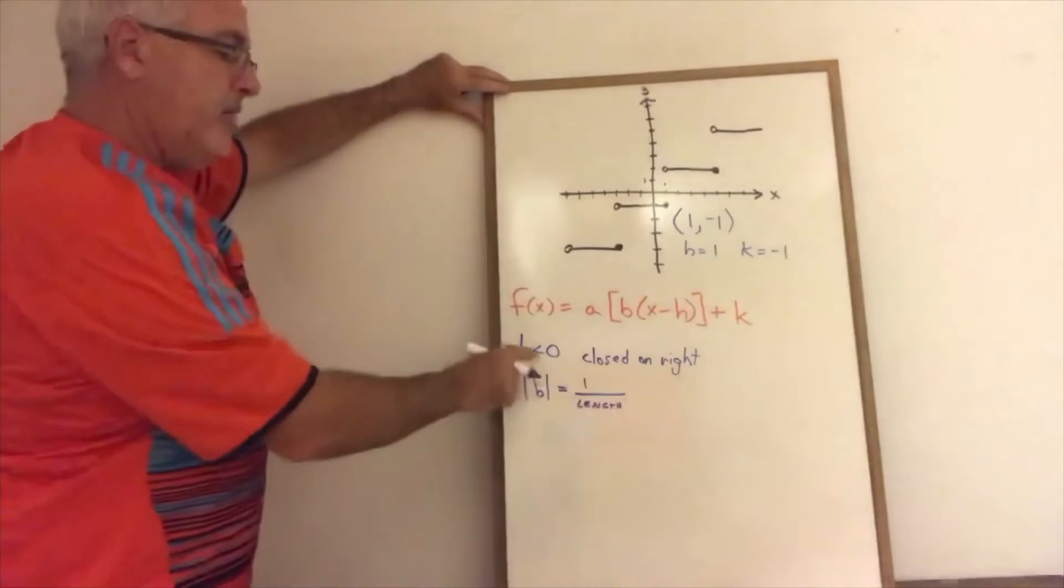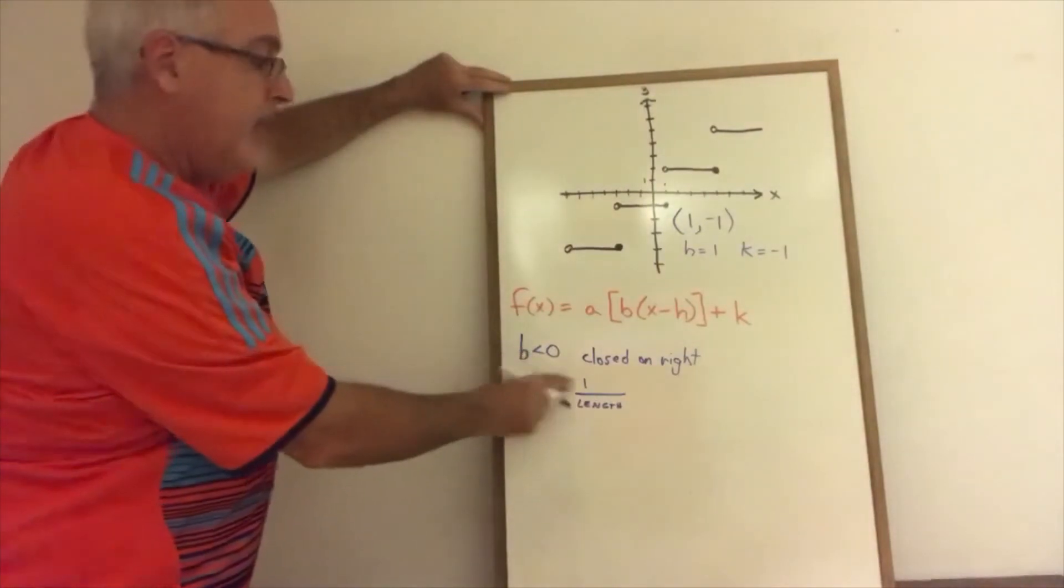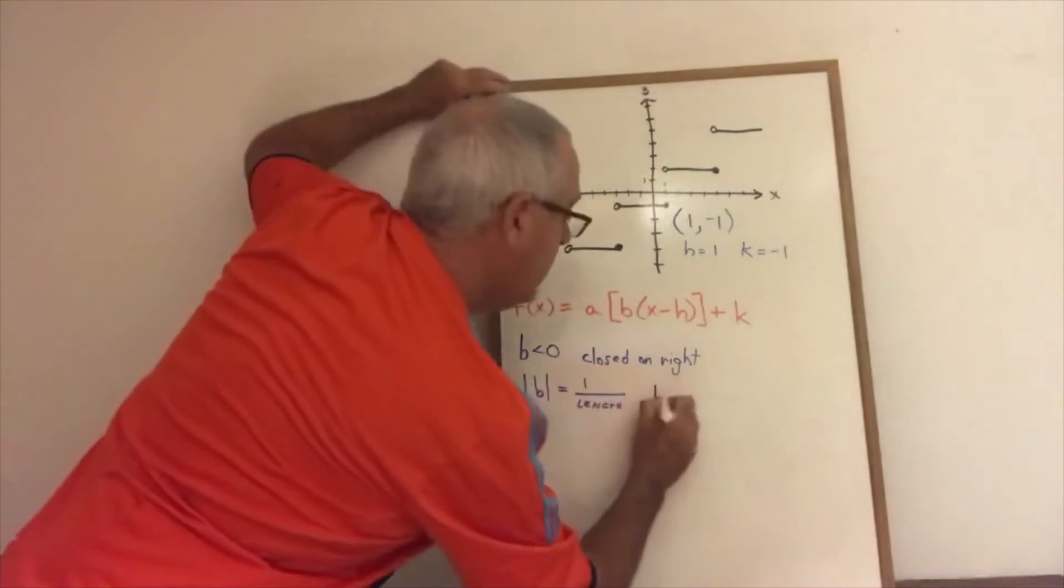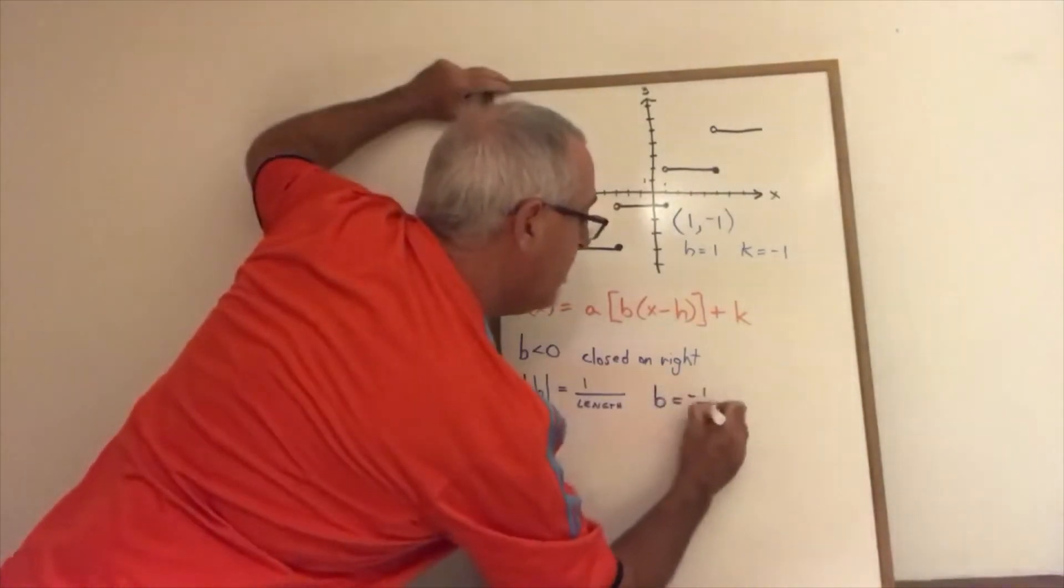We already know that our b has to be negative this time and we see that the length is 4. So therefore, b equals negative 1/4.